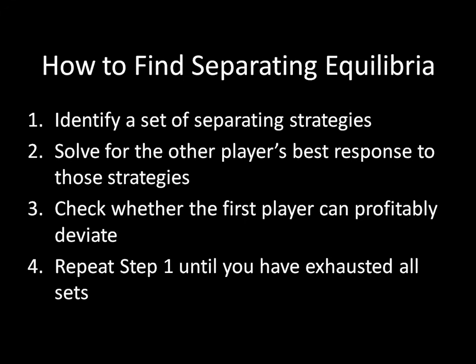So we're essentially looking for what the equilibrium best response would be to Step 1 in Step 2. And then, in Step 3, we're going to check whether the first player can profitably deviate, given what we've observed in those best responses in that second step. This is trying to verify that the strategies that the players are choosing — that we've assumed could be part of a separating equilibrium — are actually optimal.